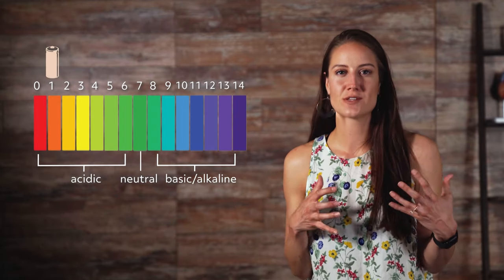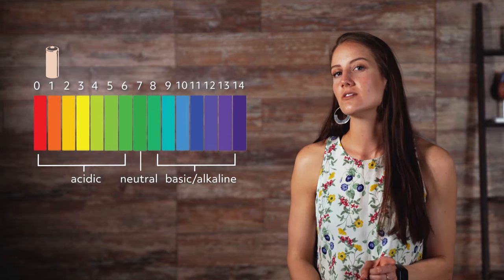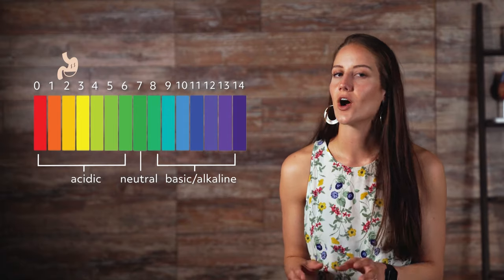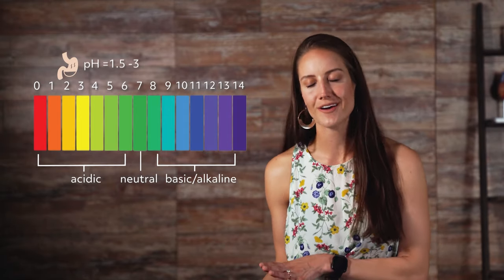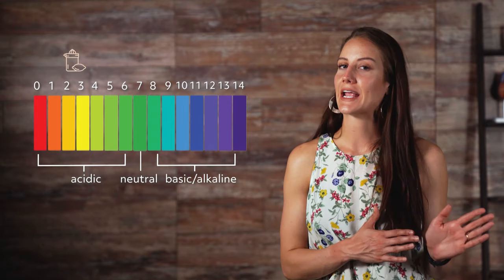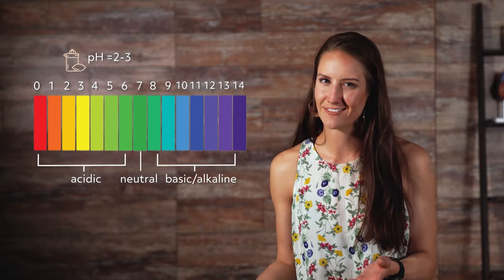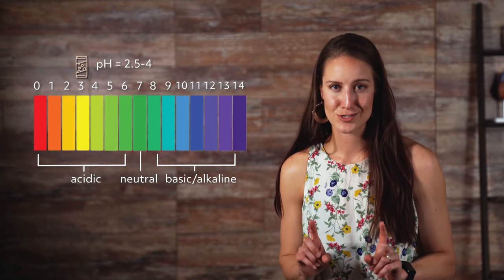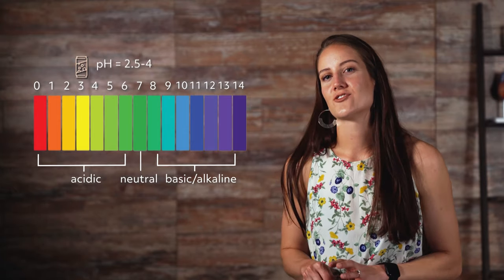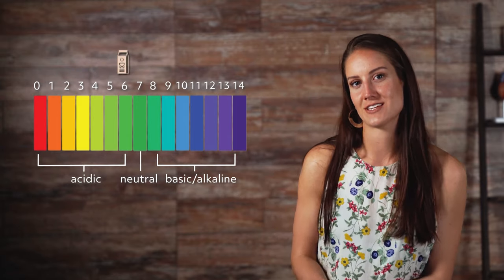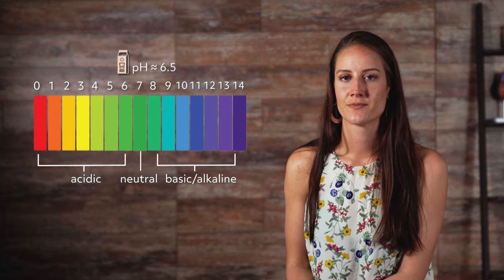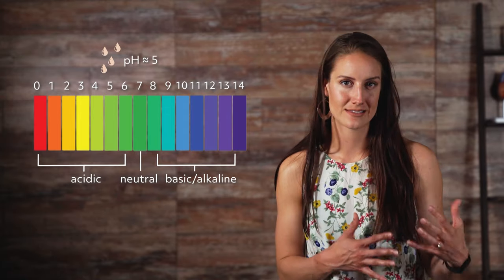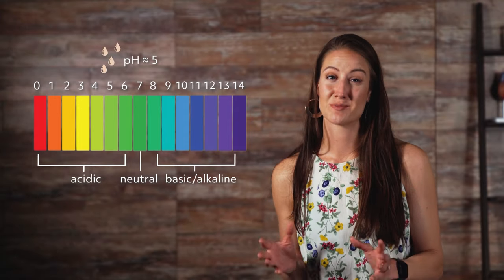Let's look at common substances on the pH scale. Battery acid, a very corrosive substance, is a strong acid with a pH of approximately 1. The gastric juices in your stomach are acidic with a pH between 1.5 and 3. Lemon juice contains citric acid with a pH of 2 to 3, just like vinegar. Most soft drinks are quite acidic with pH values between 2.5 and 4 — this is one reason dentists don't want you to drink them, as the acid dissolves the enamel of your teeth. Milk is a lot better for your teeth with a pH of approximately 6.5. Rainwater is somewhat acidic with a pH of approximately 5, but industrial pollutants can make rainwater more acidic with a pH between 2 and 4, which can be damaging to plant life.